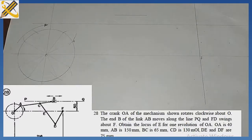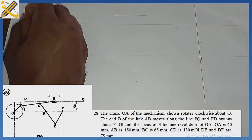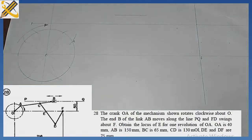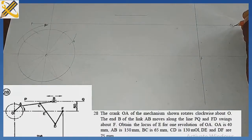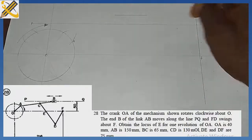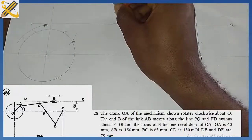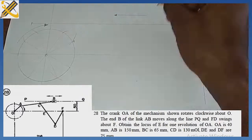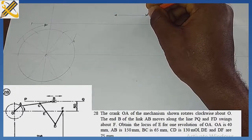The end B moves along line PQ, and FD swings about F. The first end of this line is P, the second end is Q. FD also swings. So the very first thing we need to do is get our point B. Point B slides along PQ — it moves either in this direction or this direction.